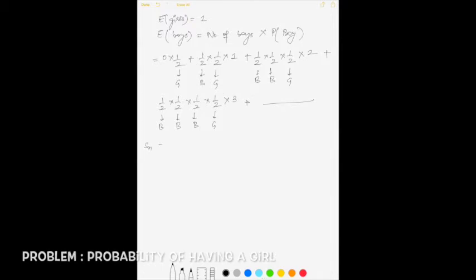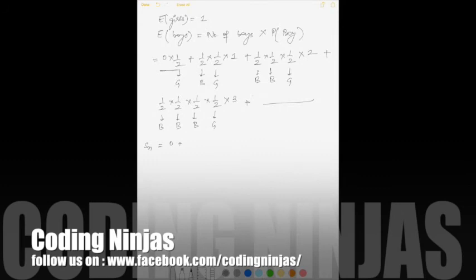So we can simplify something like this. Sn is equal to, this term becomes 0. So 0 plus 1 by 4 plus 2 into 1 by 8 plus 3 into 1 by 16 and so on.